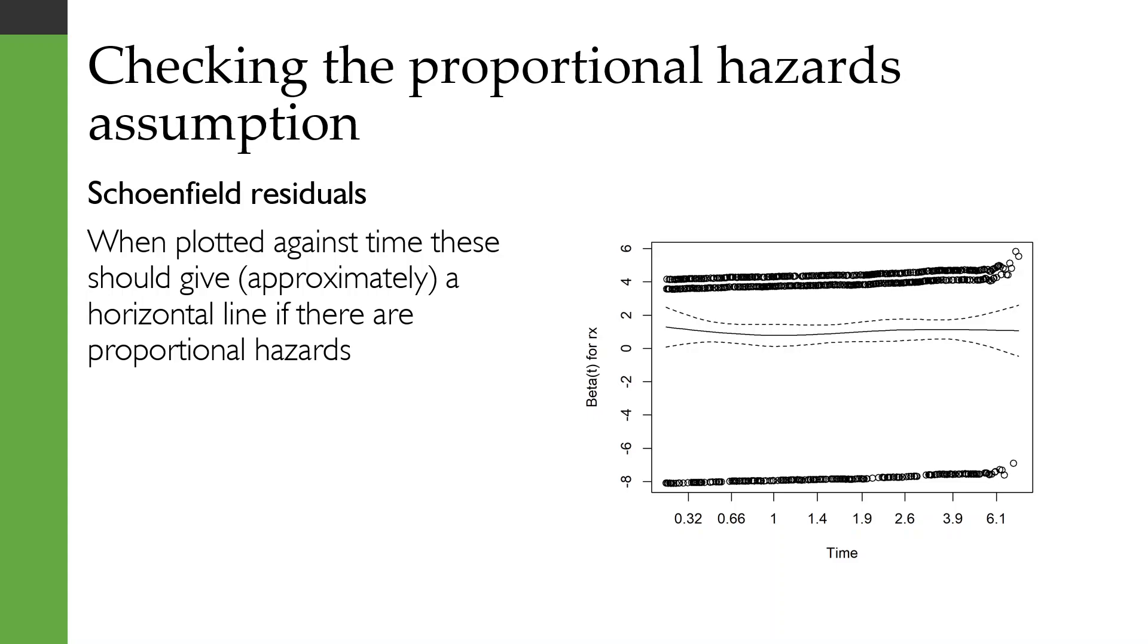Another way you can check the proportional hazard assumption is by using something called the Schoenfeld residuals. I would basically encourage you to just look this up. You can search online for test proportional hazards assumption and this will be one of the things that gets shown to you. When you plot them against time, they should give you an approximately horizontal line if there are proportional hazards. So here we do have approximately a horizontal line.